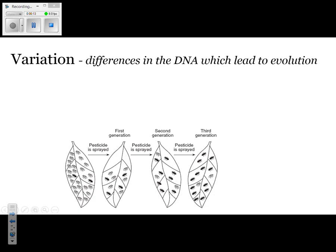Variation is the differences in the DNA which lead to evolution. Why does this variation occur — why are there differences in the DNA? The reason is because of sexual reproduction. In evolution, they don't refer to it as sexual reproduction; instead, they call it the recombination of genes.